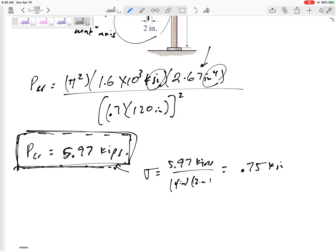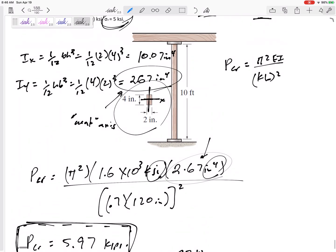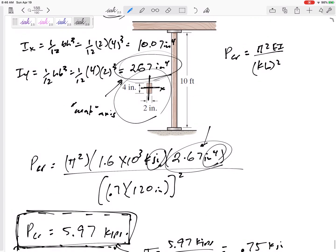So the answer that we're looking for is a force 5.97 Kips, not 5.97 KSI. 5.97 Kips is the force that will cause it to buckle. It buckles about the weak axis, the axis with the smaller I, the smaller moment of inertia.